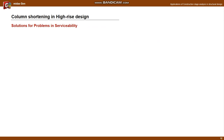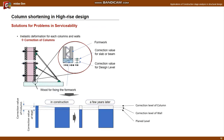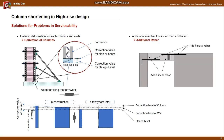So what is the solution for differential shortening? The serviceability problem is solved through correction when pouring columns and walls. The pouring level of the vertical member is corrected so that the final shortening reaches the planned level and has a similar level for each vertical member. For this, it is important to calculate the correction value exactly. If the predicted shortening does not occur after correction, problems may arise due to correction.